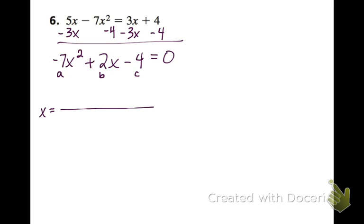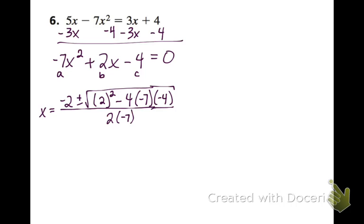So here we go. x equals negative b, so negative 2, plus or minus the square root of b squared minus 4 times a times c all over 2 times a. We're starting on the inside. If we take all of that and put it in our calculator, we're going to get negative 108.